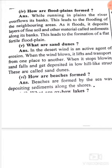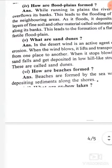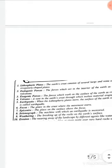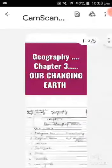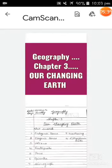How are Beaches formed? Beaches are formed by sea waves. Sea waves carry and deposit sand and sediments along the shore. The material deposited by sea waves along the coastline forms what we call beaches.